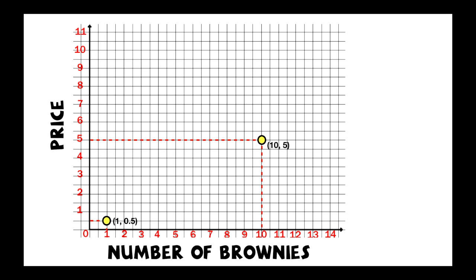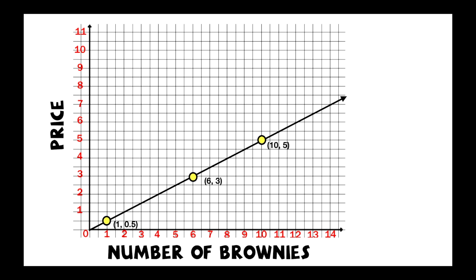If I have six brownies, it would be $3. So look at these points: I have (1, 0.5), (6, 3), and (10, 5). They all show the ratio relationship between the number of brownies and the price. The number of brownies is the independent variable because the price will depend on how many brownies I actually buy. The cool thing is that if I connect all these points together, it forms a nice line that helps me determine other relationships between the number of brownies and the price.